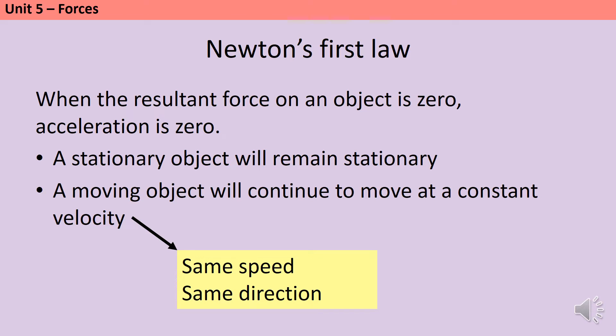Remember, velocity is a vector quantity that we can break down into speed and direction. So if something speeds up, it's accelerating. If it slows down, it's still accelerating, even though in everyday language we'd probably say decelerating. And if it changes direction, even if it's going at the same speed, then that's acceleration as well.